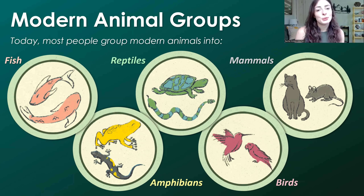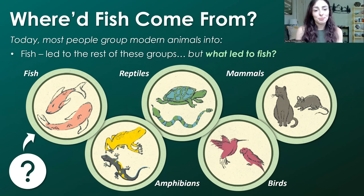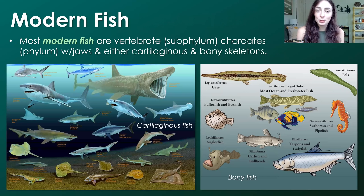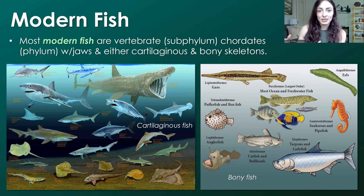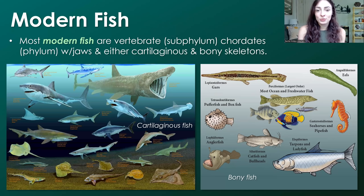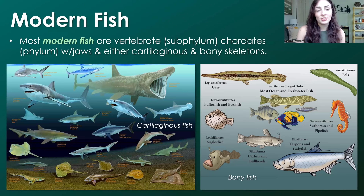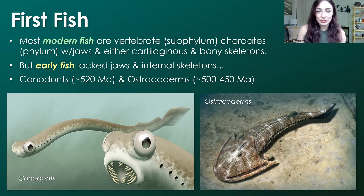Most people group modern animals into five main categories: fish, amphibians, reptiles, birds, and mammals. But if fish led to the rest of these groups, what led to fish? Most modern fish are vertebrates, which is their subphylum — they have vertebrae, backbones. They are also chordates, in the phylum chordata, a taxonomic category broader than subphylum. Most modern fish also have jaws and skeletons, either cartilaginous like sharks and rays, or bony like our own. But early fish lacked jaws and internal skeletons.